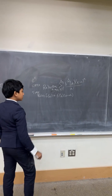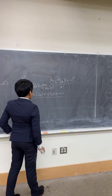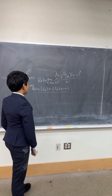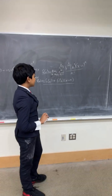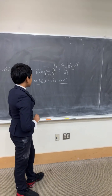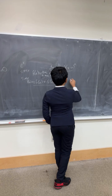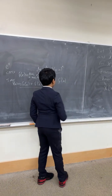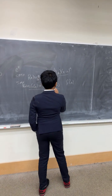Okay, f of a plus f prime of a times x minus a. So now, what do you think will happen if we plug in a plus some small value — I'll just say h — in place of a?